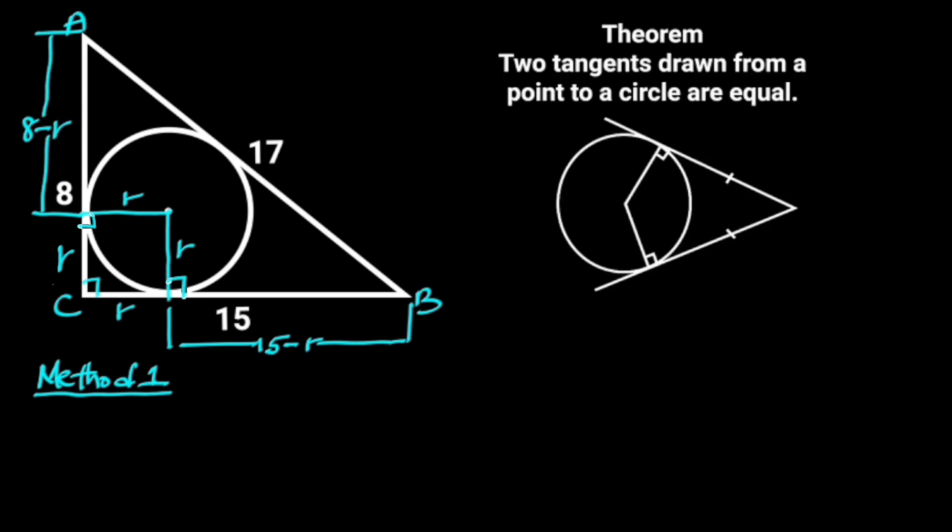Next, let's recall the circle theorem of two tangents drawn from a point to a circle. It states that two tangents drawn from a point to a circle are equal. From this diagram, the two tangents are drawn from this point. So if this length is X, this other length must be X. From our question, these two lines are tangents from point A. Since this tangent is 8 minus R, then this tangent is also 8 minus R.